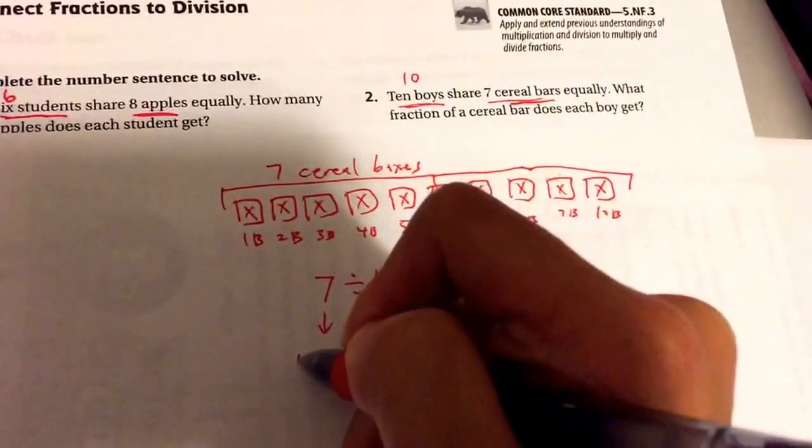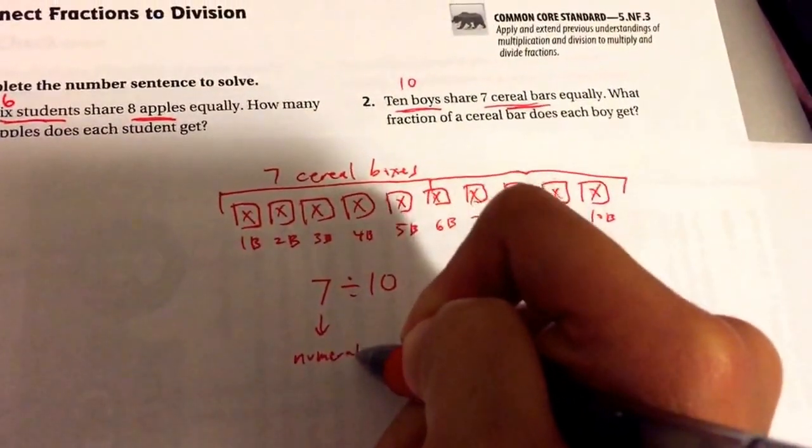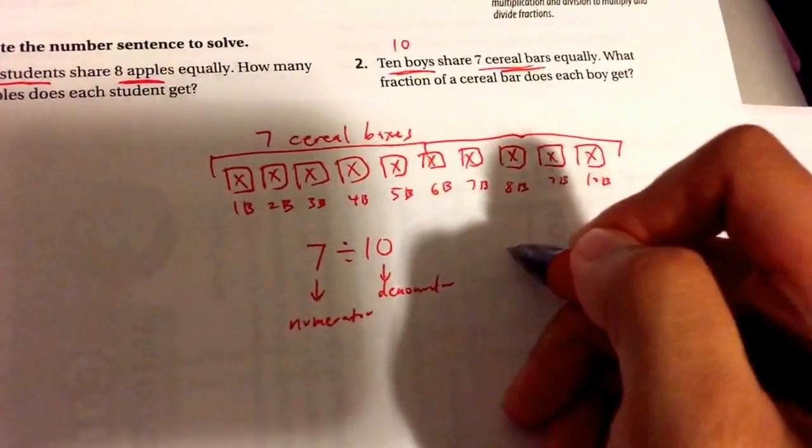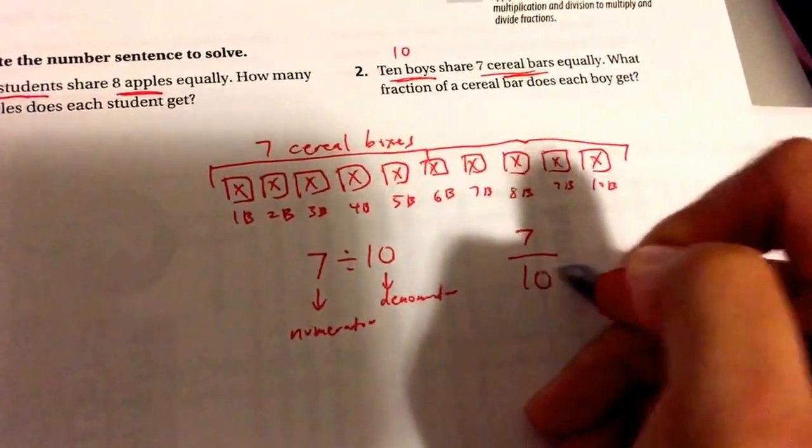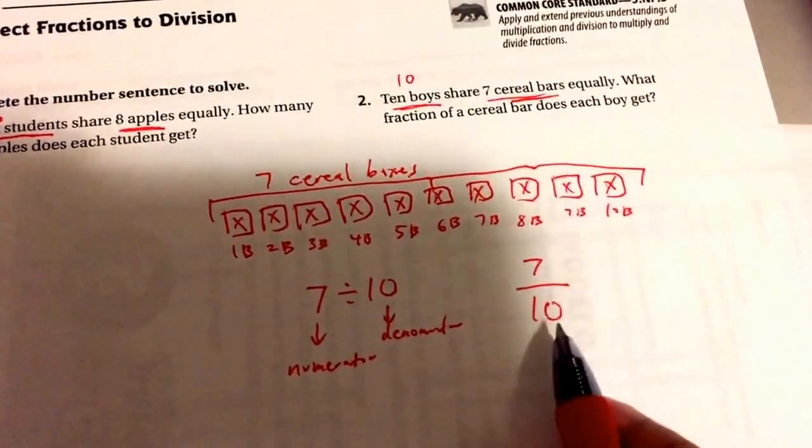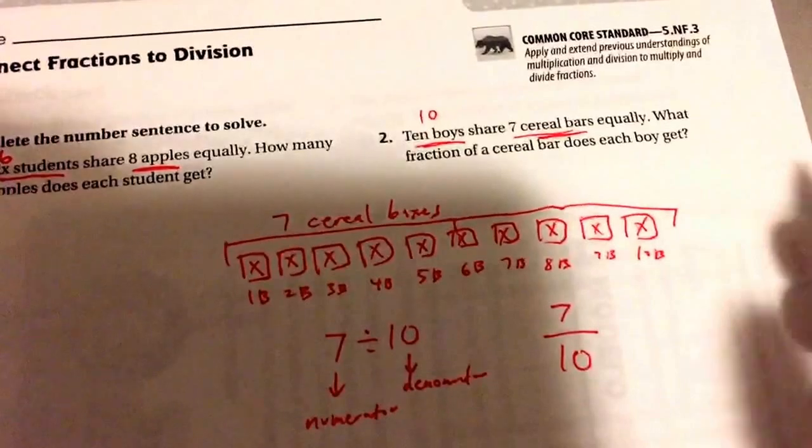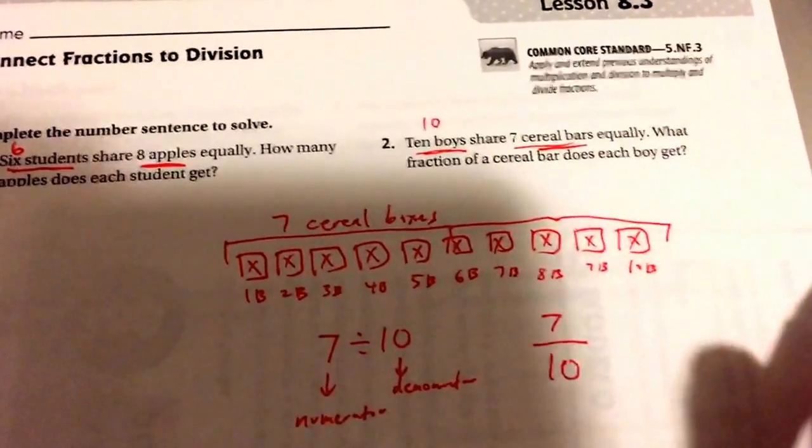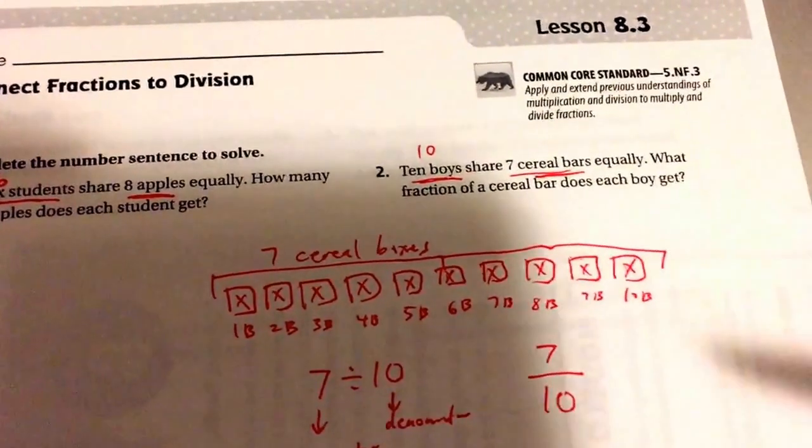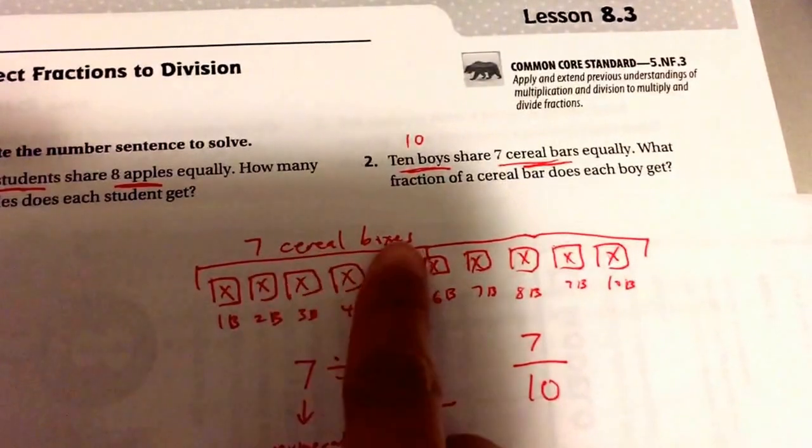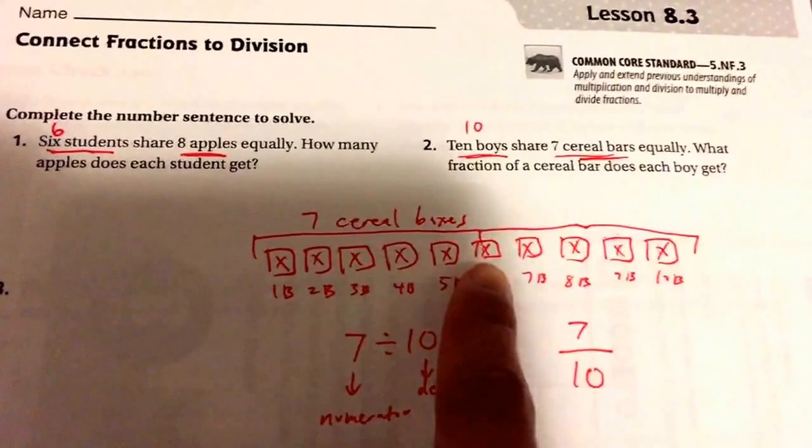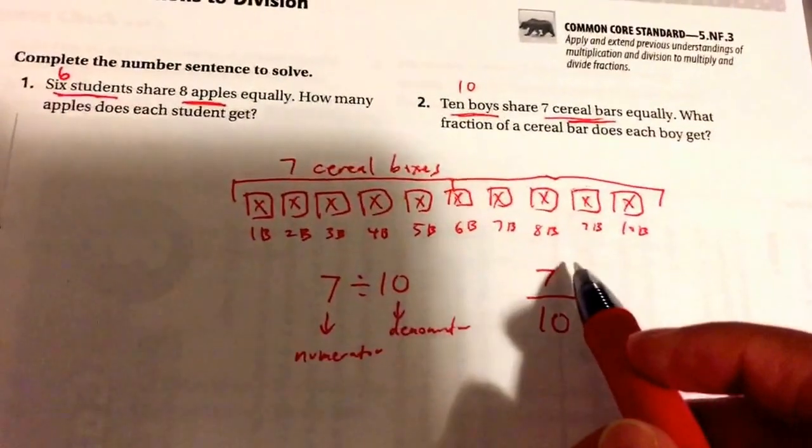The first number is our numerator. The second number will be our denominator. Our numerator is our top number. Our denominator is the bottom number. Now, let's think about it. Our numerator is smaller than our denominator, so the answer is less than 1, so we don't have to put it into the house. We only need to put it inside the house if the numerator is larger than the denominator because it means it's more than 1. Think about it. If we have 7 cereal boxes and we're sharing with 10 people, no one's going to get a whole box because there's only 7 and there's 10 people that we're sharing it with, so our number will be less than 1.